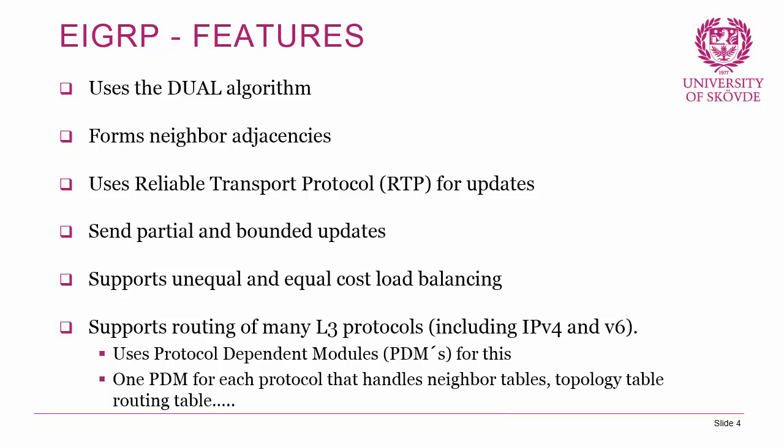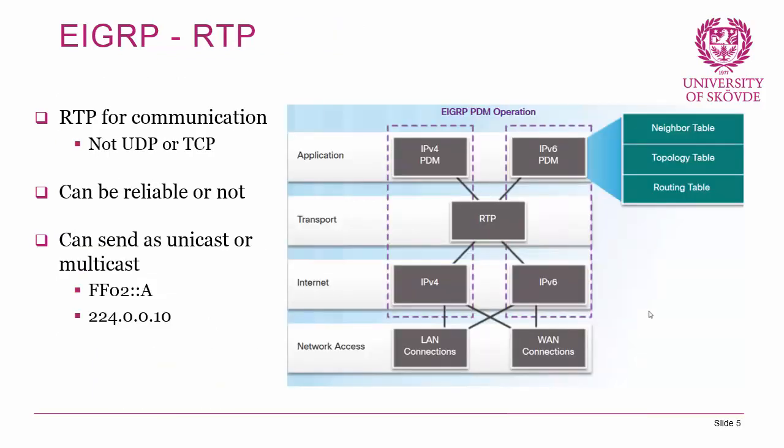Each PDM handles its own neighbor table, topology table, and routing table independently. Looking at the Reliable Transport Protocol, it can send packets reliably or not — reliable delivery requires an acknowledgement. All RTP packets are sent as unicast or multicast using the addresses shown in the picture.